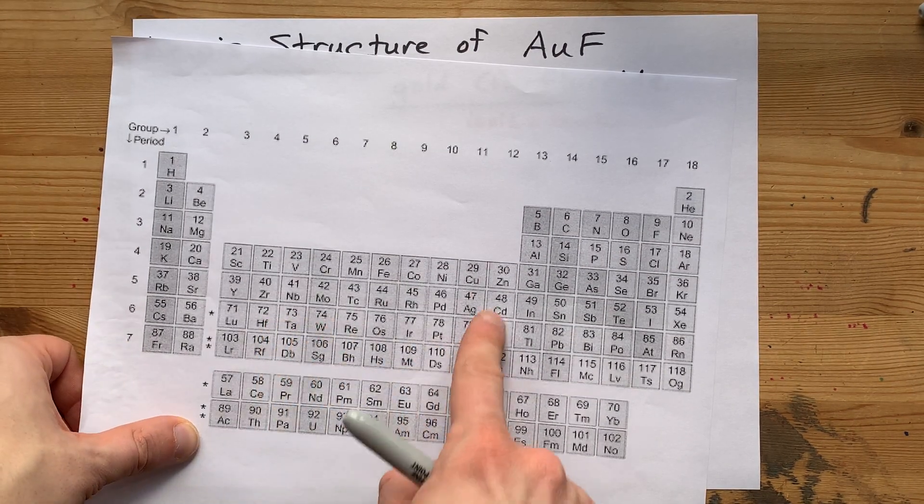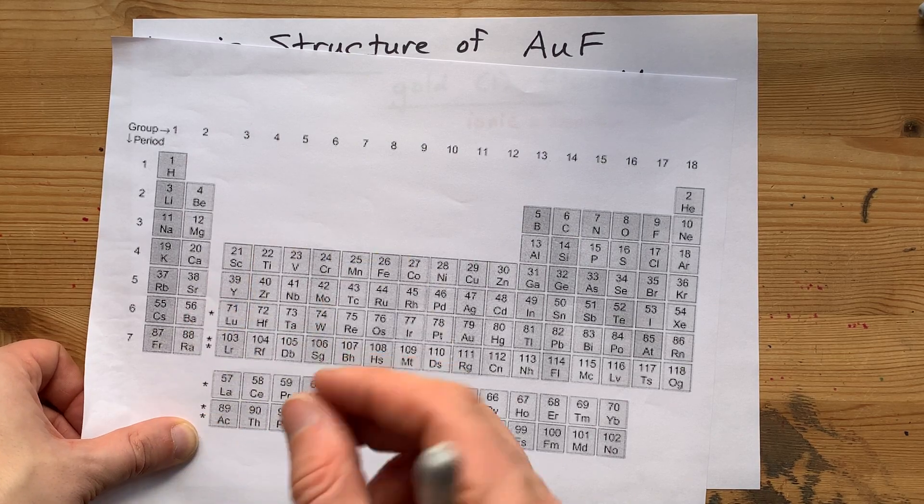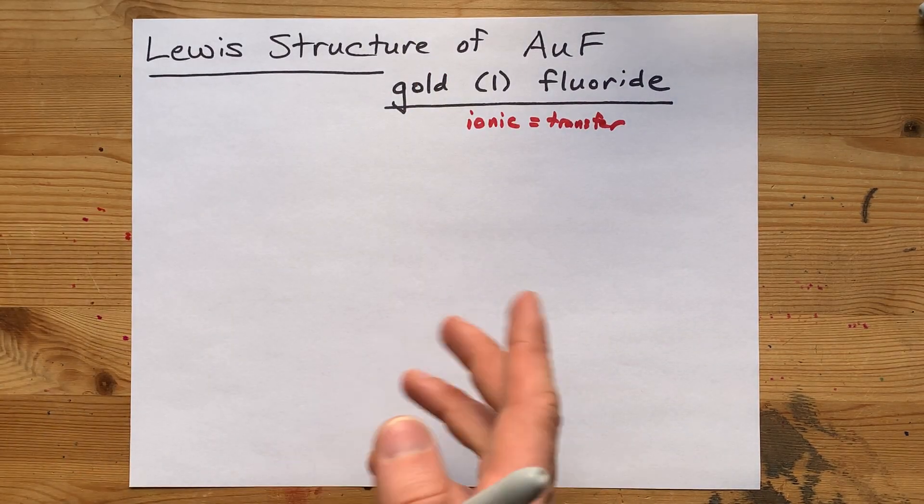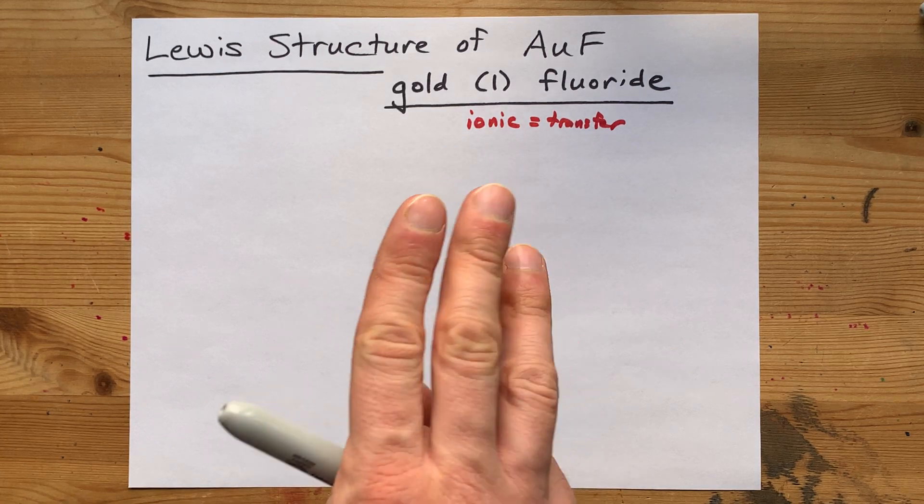Gold is in this transition metal block and can have more than one possible charge. Gold can actually have a charge of either one or three.